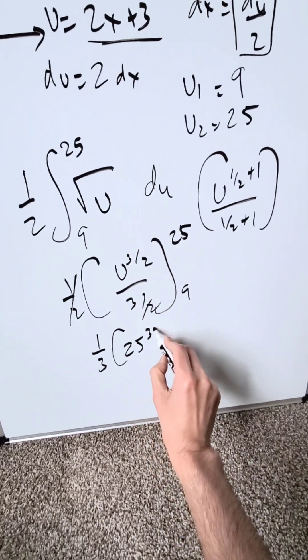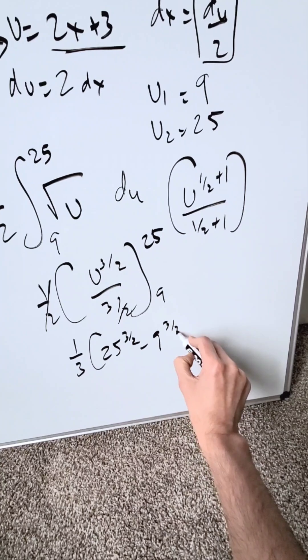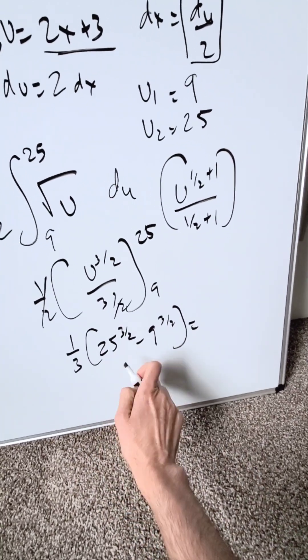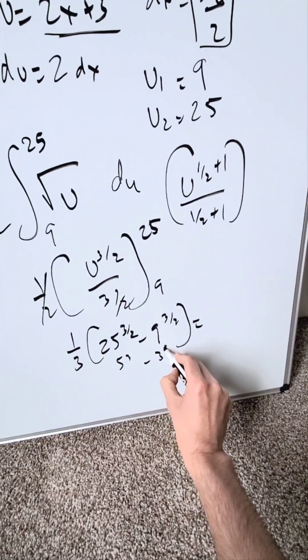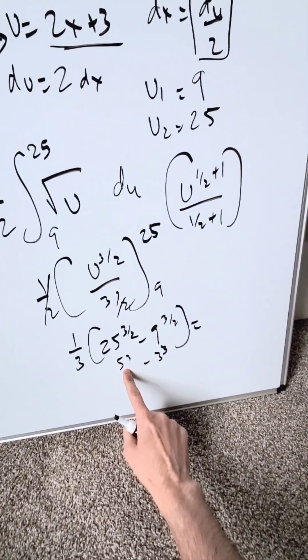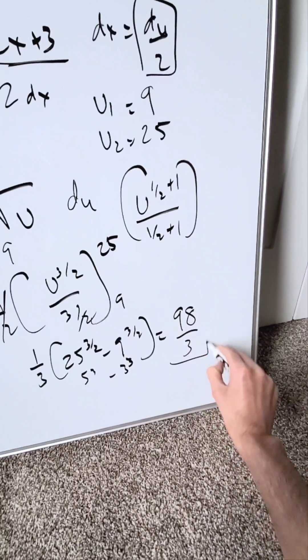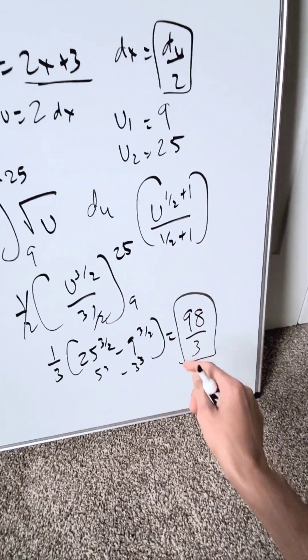You have a 25 to the power of 3 over 2 minus 9 to the power of 3 over 2. You can run this through your laws of exponents. This right here will be no different than just a 5 cube minus 3 cube, which will be a 125 minus a 27. Your end result here will be a 98 over 3. It will be a correct answer.